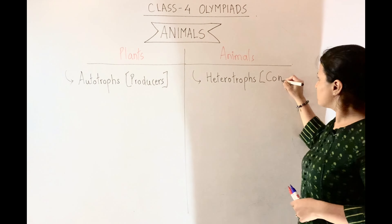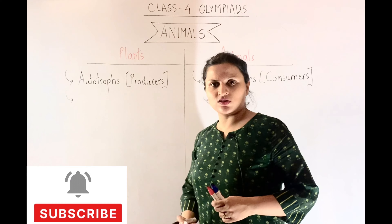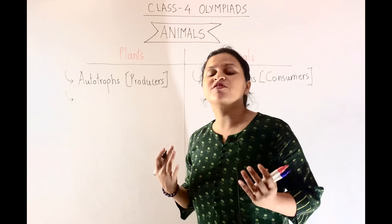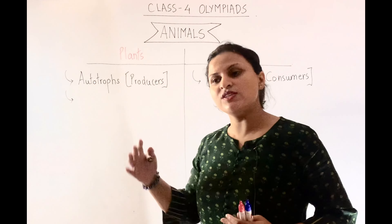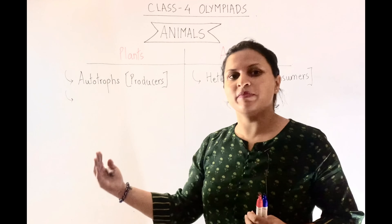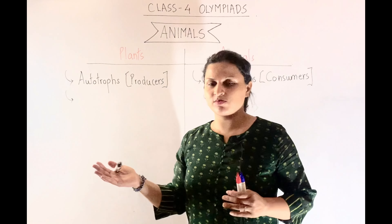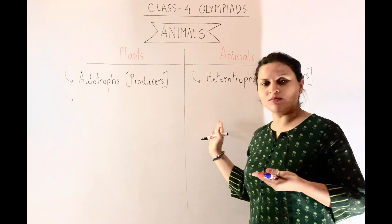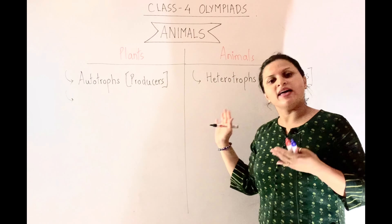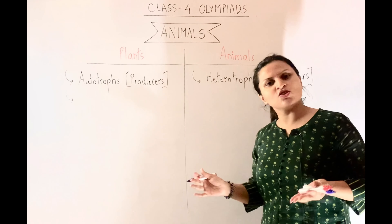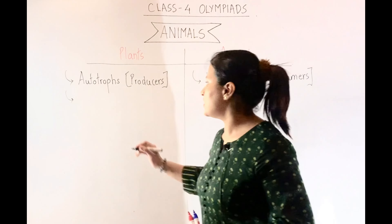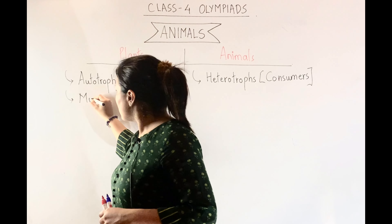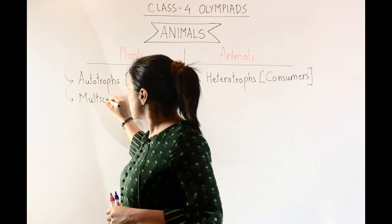Are plants unicellular or multicellular? They are multicellular, made up of many cells. Unicellular organisms like bacteria are made up of single cells, but plants are multicellular. How about animals? Animals are also made up of many cells — they are also multicellular. So both plants and animals are multicellular organisms.